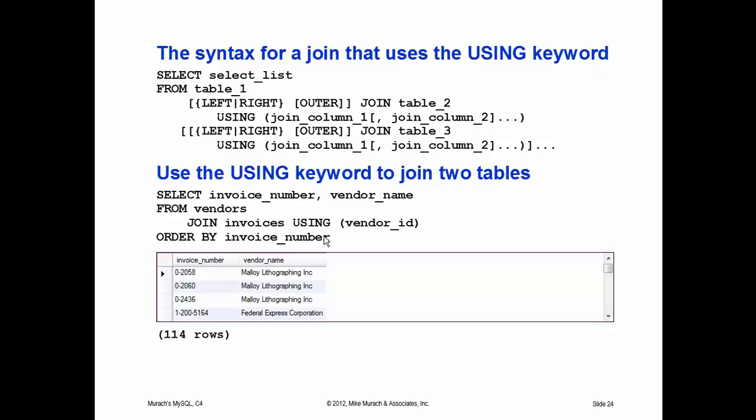There are some shortcuts you can use. If you notice on the example, it says: SELECT invoice_number, vendor_name FROM vendors JOIN invoices USING vendor_ID. So if the field name that you're joining on is exactly the same, you don't have to have a big condition where you say invoices.vendor_ID equals vendors.vendor_ID. You'll get the same information — it's a little bit of a shortcut. You can do it for more than two tables as well.